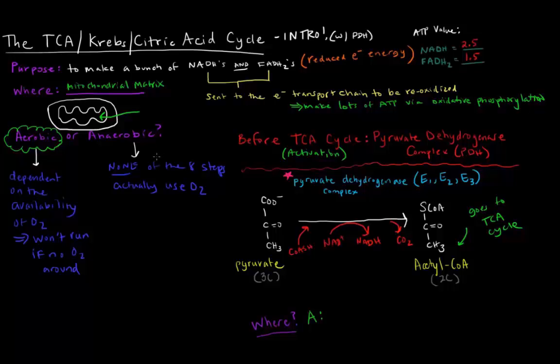So, we added a coenzyme A and NAD+, and we got out an NADH and a CO2. So, in addition, there are actually three more cofactors that are involved in this. And those three cofactors are TPP, lipoate, and FAD. All of these things are required in order to get this reaction to run.